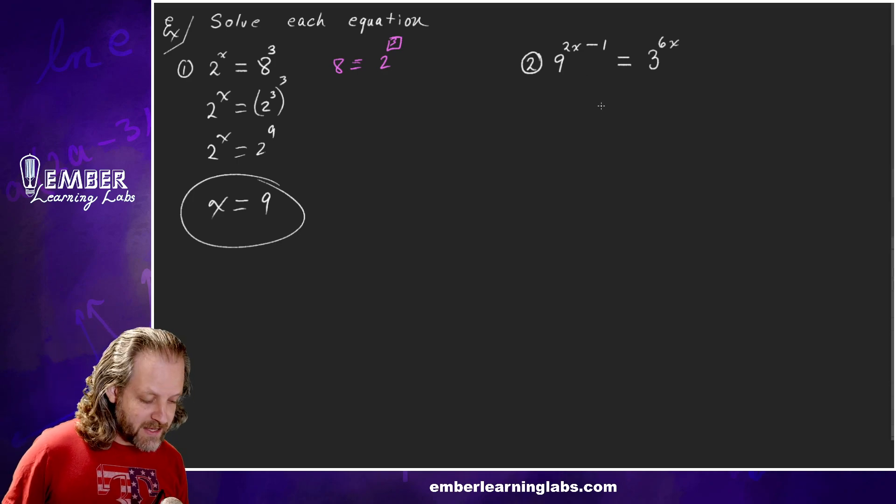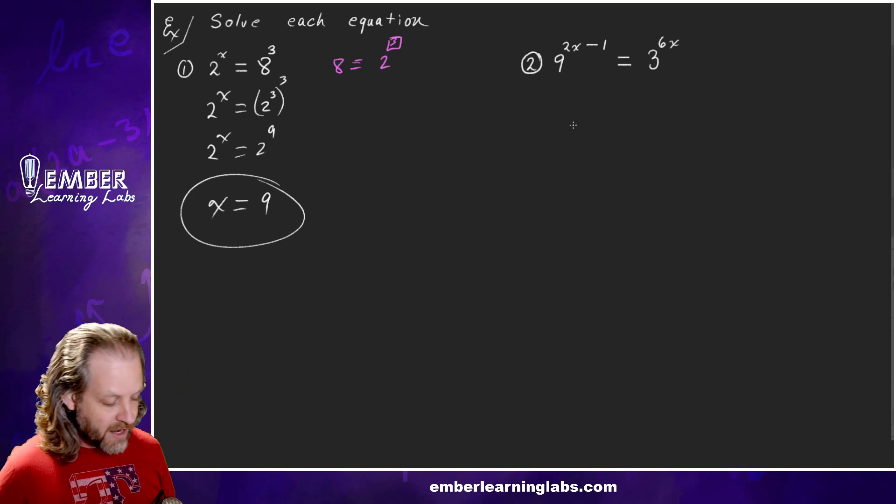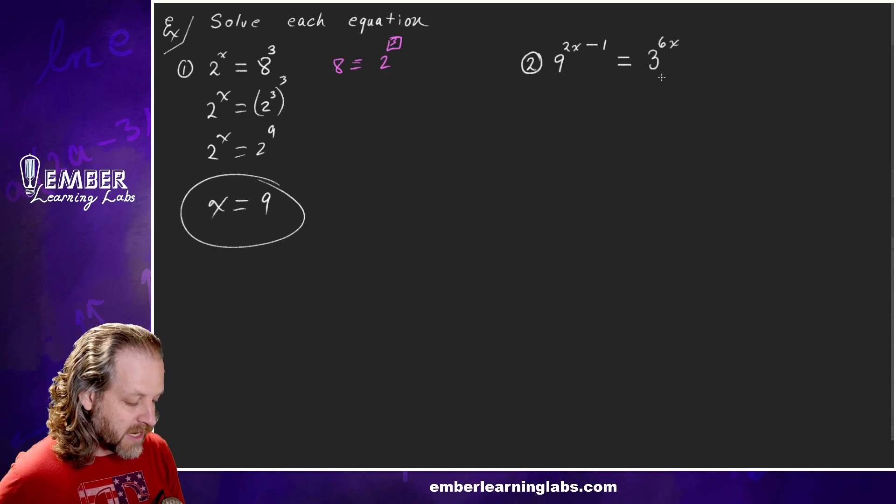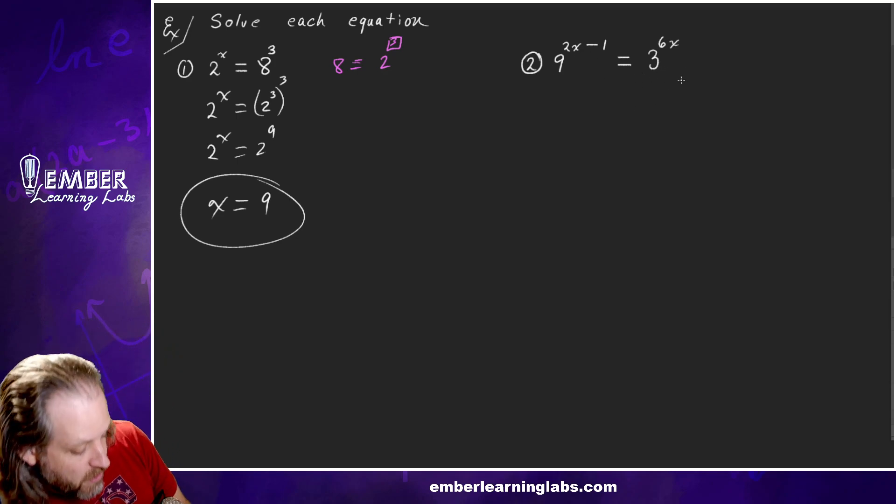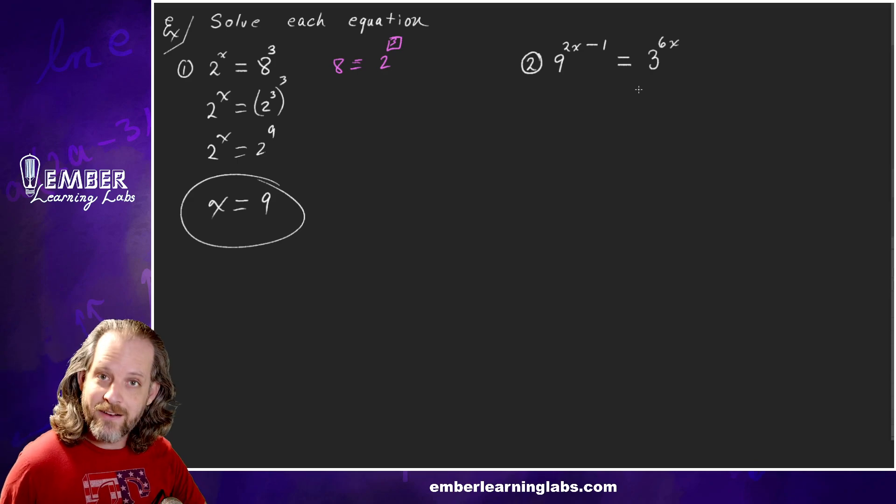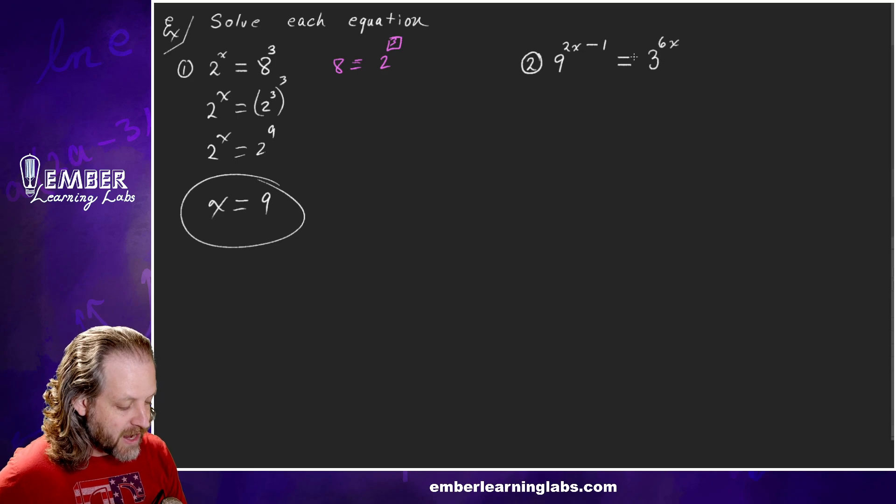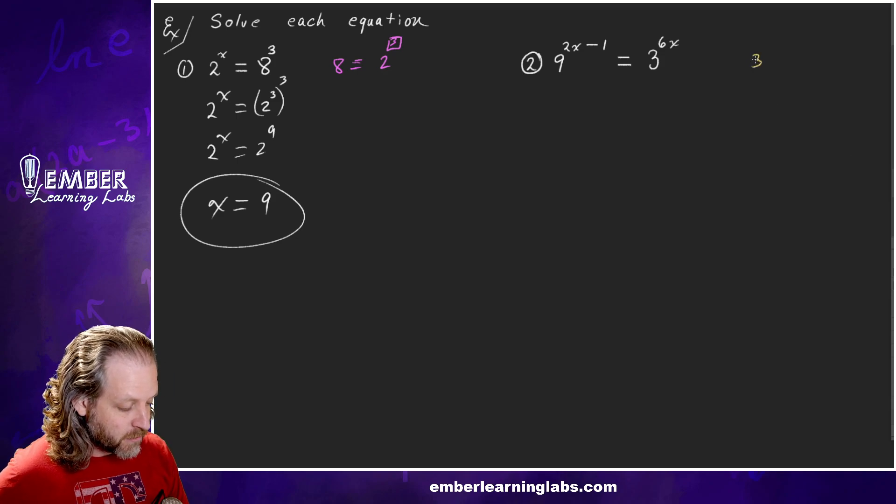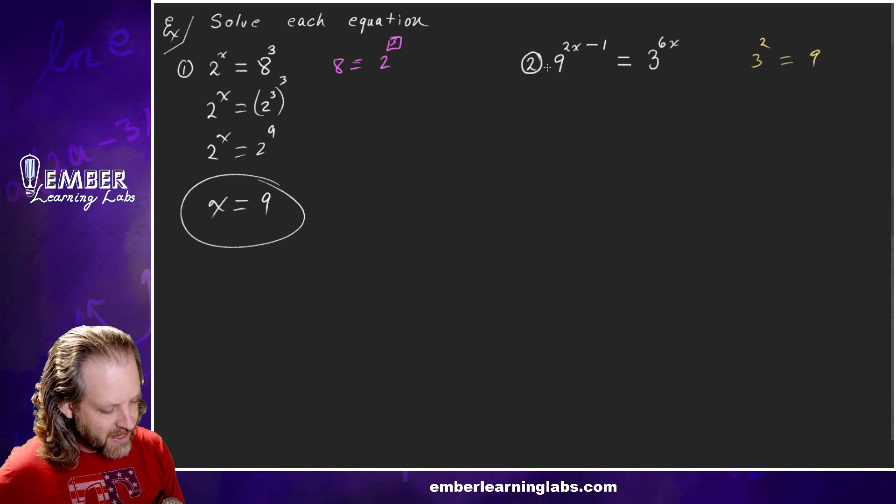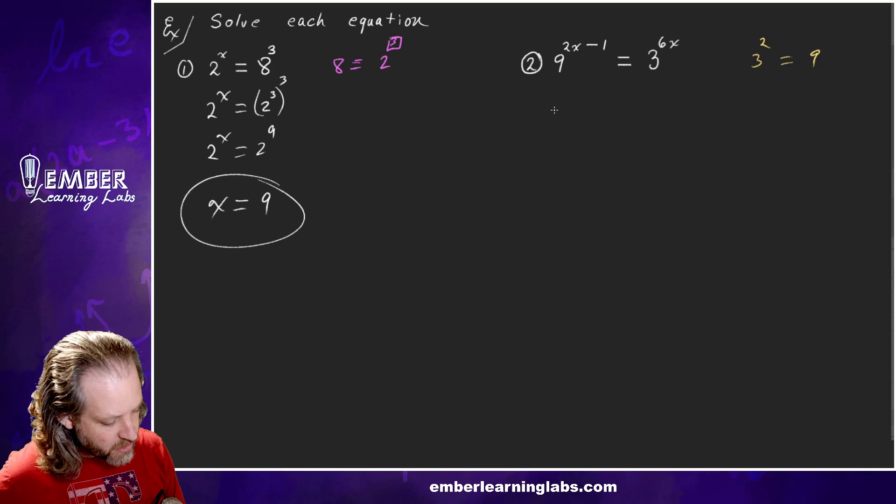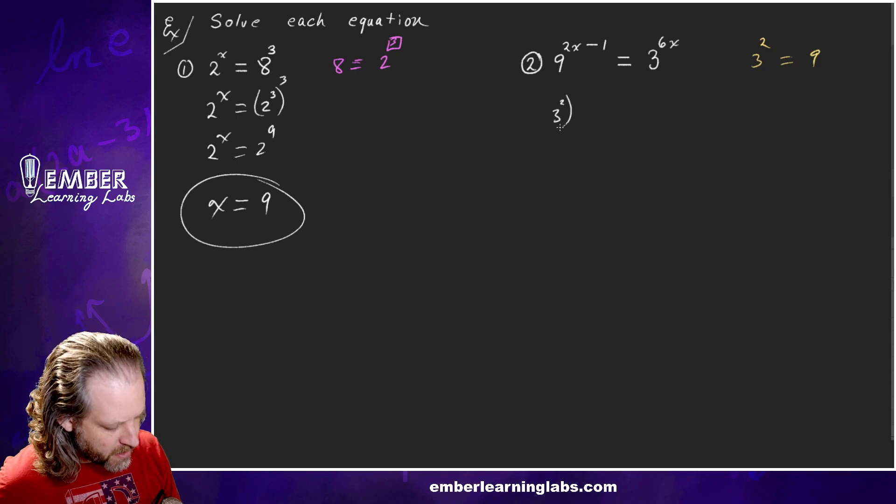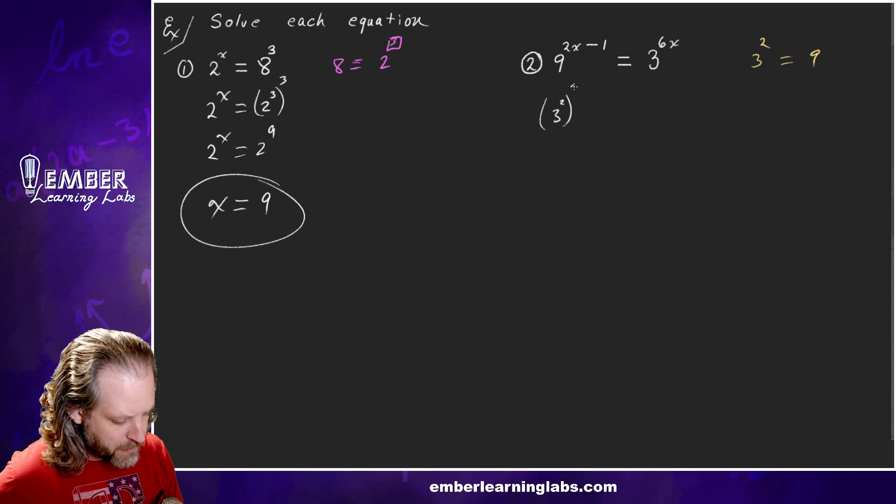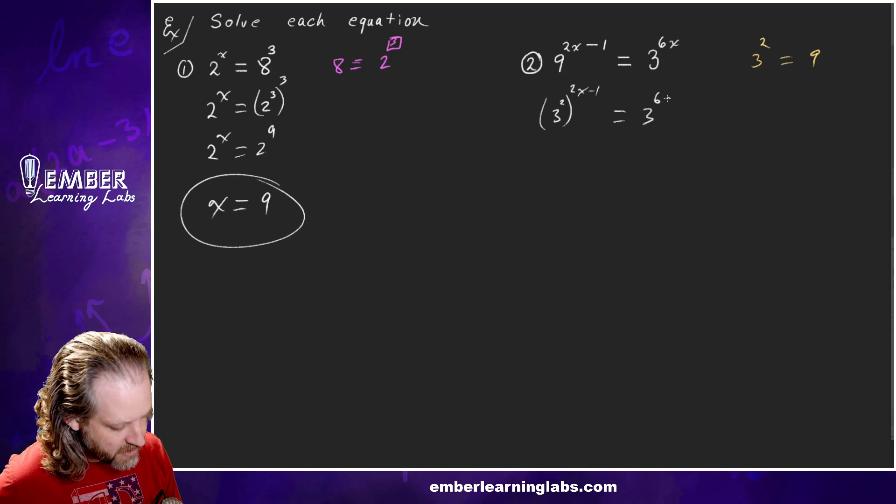Let's take a look at this one. Same idea. Can we turn either one of these into the other one? If we can take and turn the bigger one into the smaller one, that's what we want to do. 3 squared, because 3 times 3, is 9. So we could turn this 9 into 3 squared.